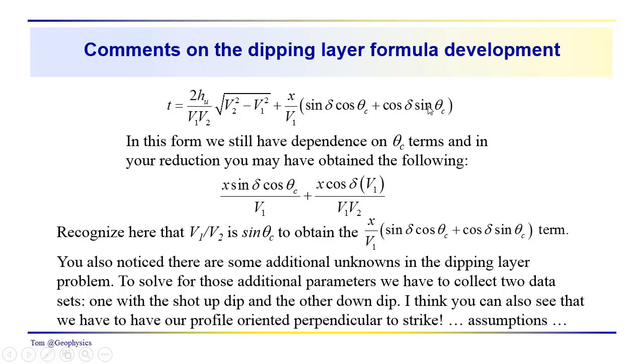But to get the equation into this form, we had to recognize that V1 over V2 is sine of theta critical. So if we want to get everything over the same common denominator, you might be tempted to try to get a V1, V2 here and so on. But just recognize that V1 over V2 is the sine of theta critical and that would allow you to get the expression into this form.